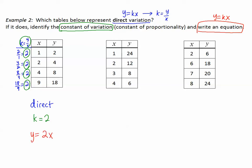How about the next table? Let's put k over here and do y divided by x: 24 divided by 1 is 24; 12 divided by 2 is 6. I'm going to stop there because I'm getting different numbers. These are not the same, so this one is not direct variation.